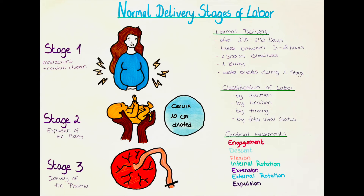As the baby goes through the different cardinal movements, it is gradually born. In a cephalic presentation, the head is the first part to be born. After the head is born, the baby rotates for the delivery of the anterior shoulder, then the posterior shoulder is born, and lastly the lower body and the umbilical cord. As the baby's head is the largest part of its body, labor should progress more easily after it is delivered.